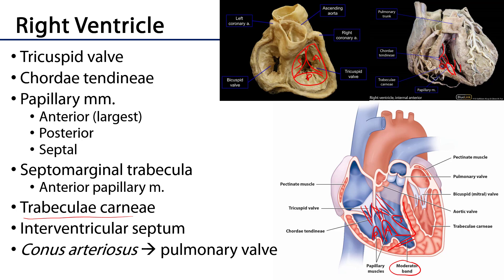There's also an interventricular septum, which has muscular parts and membranous parts to it. As blood leaves the right ventricle, it heads towards the pulmonary valve and the pulmonary trunk, but the region here is called the conus arteriosus and it is very smooth-walled. There isn't a whole lot of contraction occurring there — we don't want a lot of turbulence going through the valves, so the conus arteriosus is very smooth.